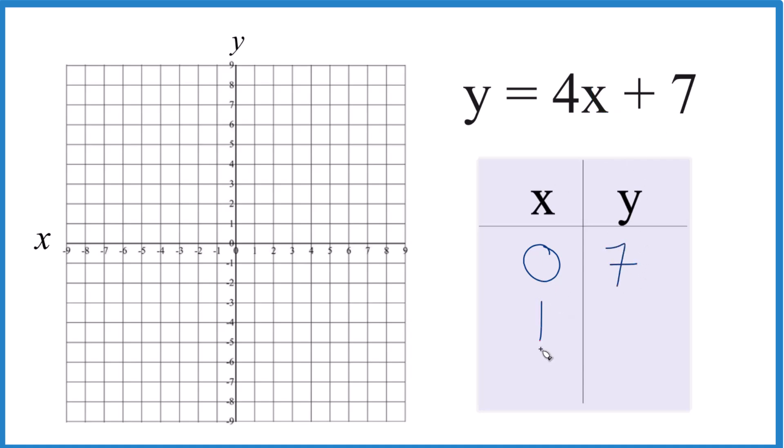How about we just choose 1? I'm just making these numbers up. Here, if I said 4 times 1, that's 4. 4 plus 7 is 11, and that would go off my graph. So I don't want to do that.